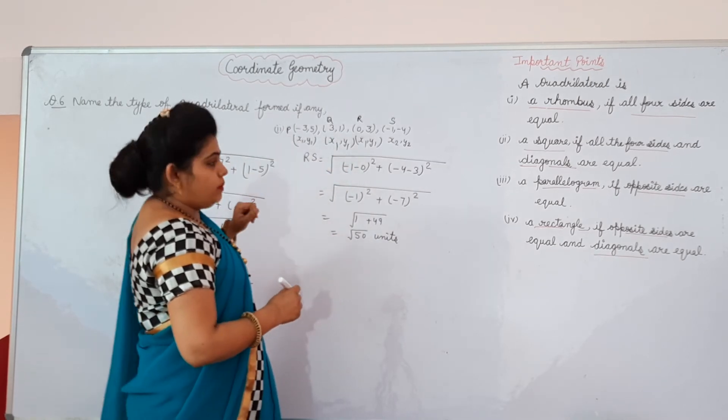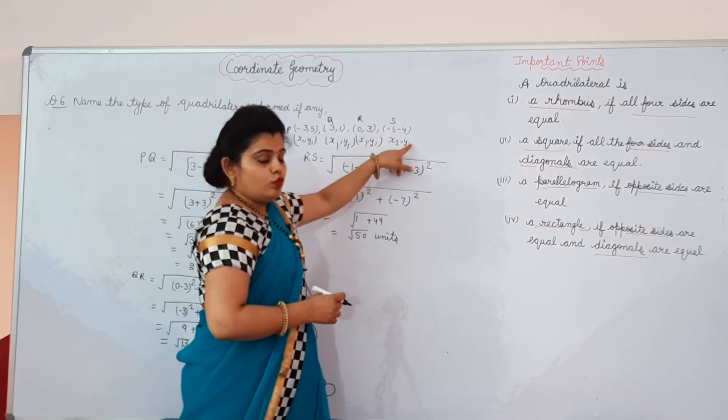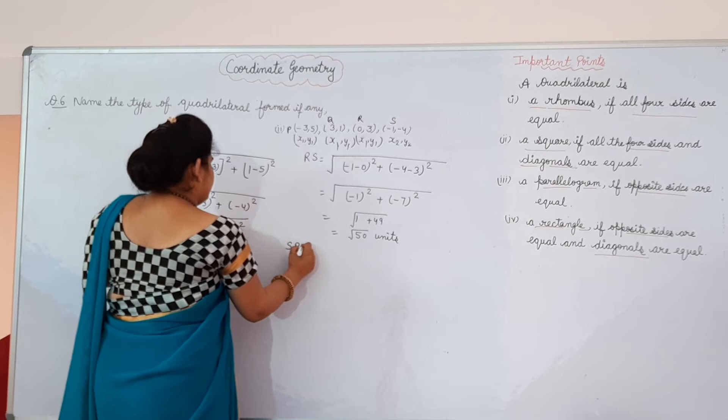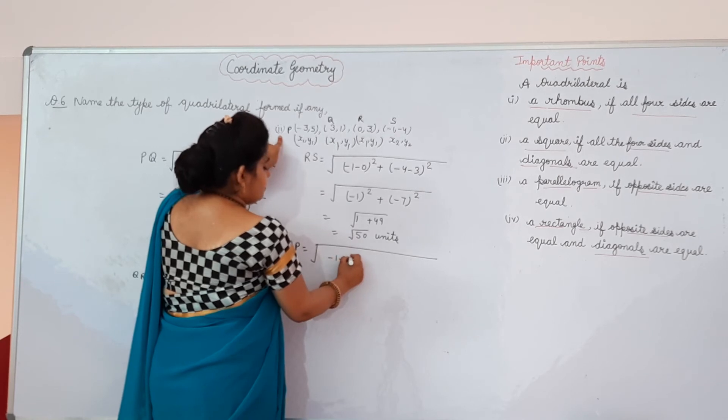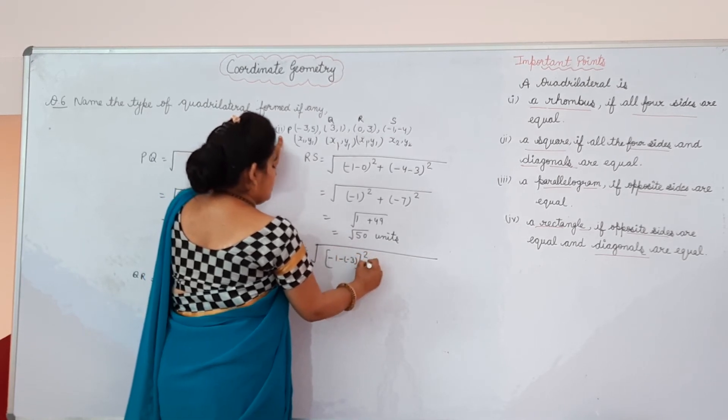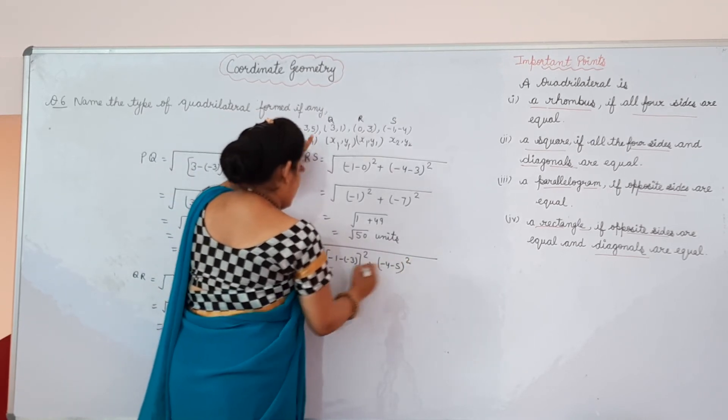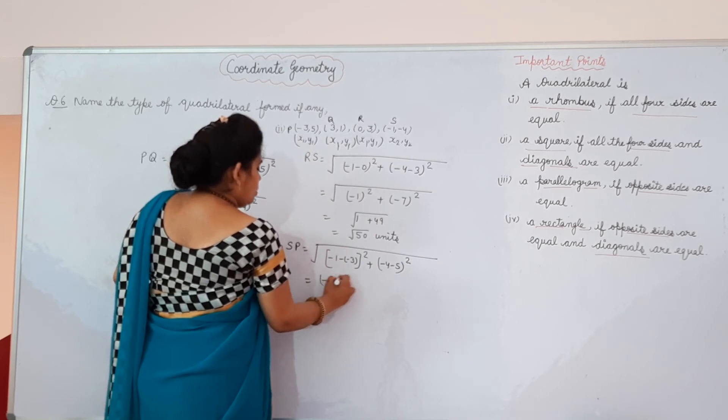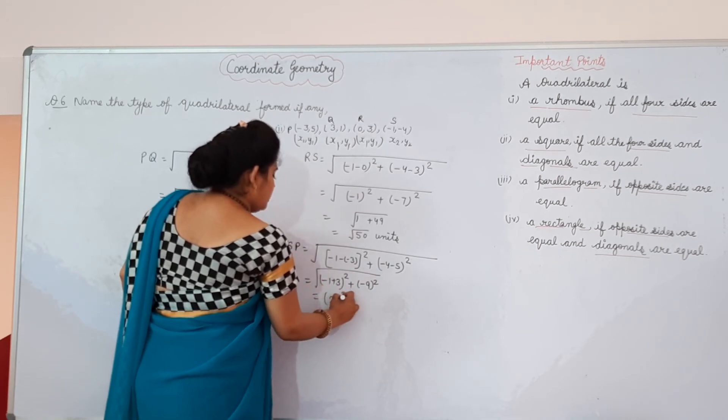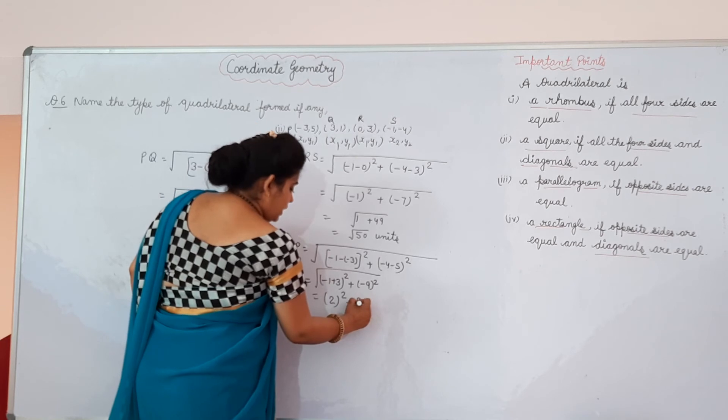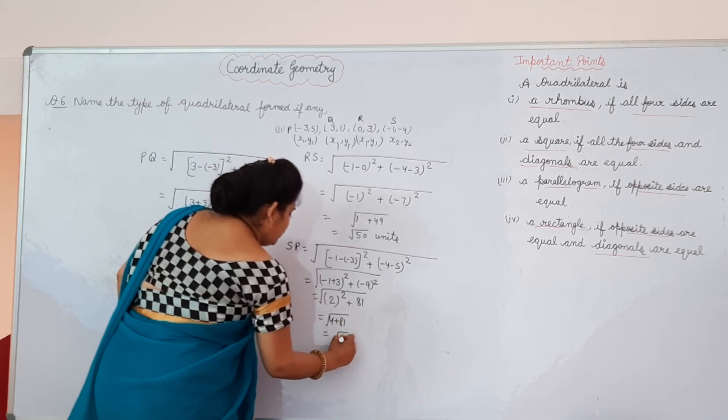Now we will find RS. If I am taking it as X1, Y1 and it has X2, Y2, then RS will equal to square root of minus 1 minus minus 3 whole square plus minus 4 minus 5 whole square. Minus 1 plus 3 whole square plus minus 9 whole square. 2 square plus minus 9 square is 81, and from here 4 plus 81, root 85 units.